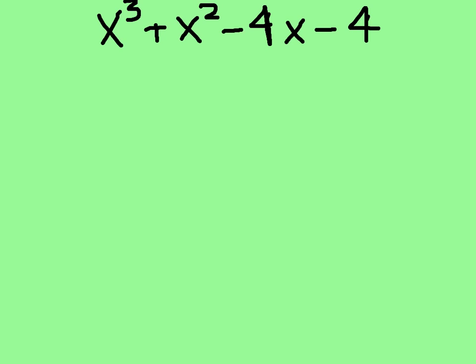Here's the next polynomial I need to factor: x cubed plus x squared minus 4x minus 4. Just like in my last example, I'm going to group the first two terms together and the second two terms together. This one's a little tricky because I have a subtraction sign here, so I want to make sure I don't lose that negative. I'm going to factor out the GCF from my first binomial — my GCF is x squared — so I get x squared times x plus 1.